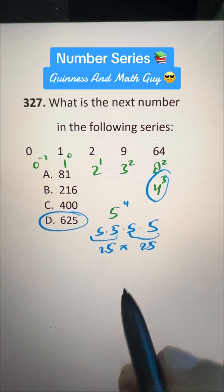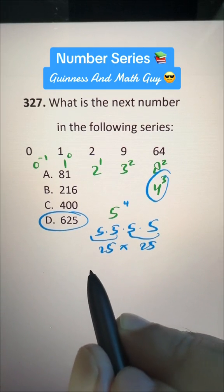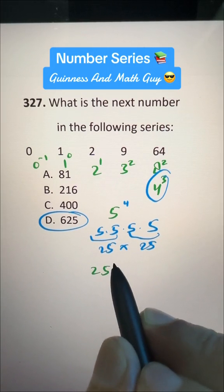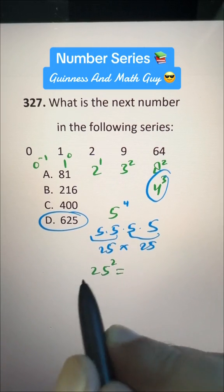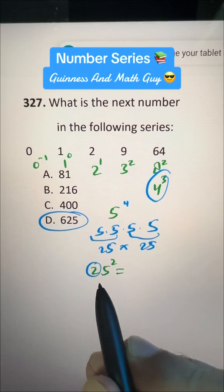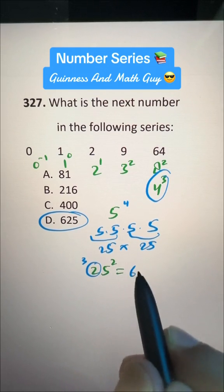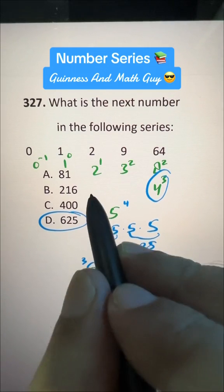And any number with 5 at the end can be squared easily. Let me tell you this trick. Whatever the number is beside 5, just take the next number. The next number is 3, so 2 times 3 is 6, and write 25.